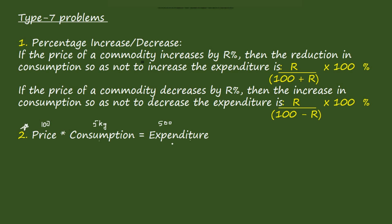When the price has been increased, then consumption should be decreased so that expenditure remains the same. The formula is: if the price is increased by R percent, then the percentage consumption should be decreased by R/(100 + R) × 100 percent. If the price is decreased by R percent, then consumption can be increased by R/(100 − R) × 100 percent to maintain the same expenditure. These two formulas are used when only expenditure is the constraint.